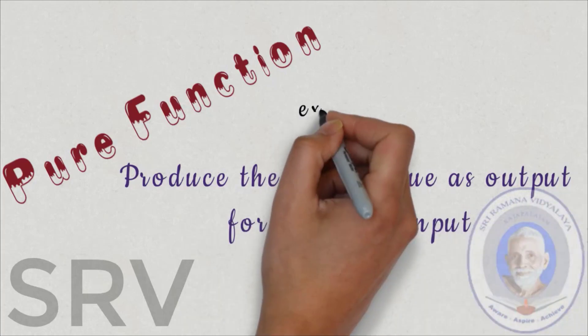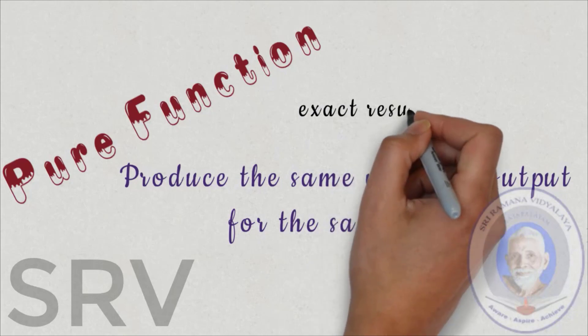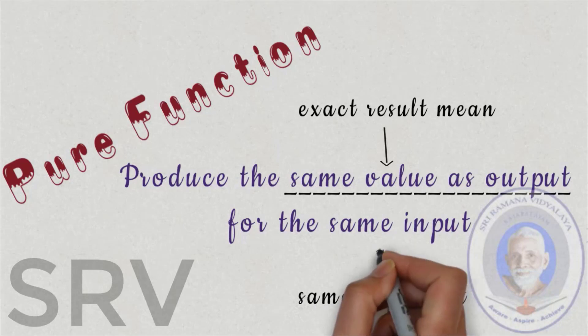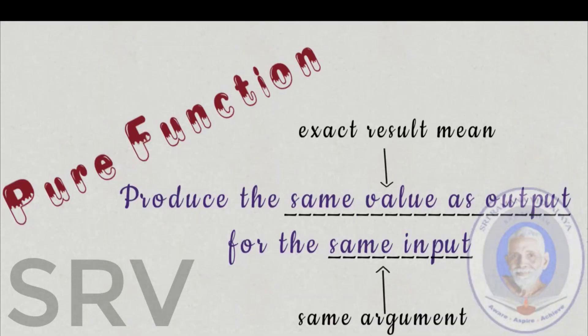From the definition, the term exact result means the same value is produced as output each time. And, same argument means when same input is passed to the function. So, whenever we pass same argument, i.e. value to a function, the pure function will always return the same output.